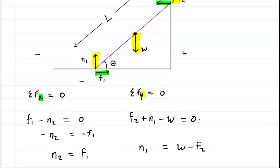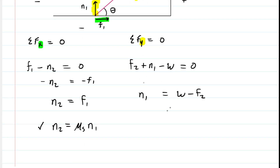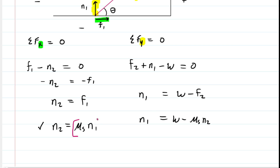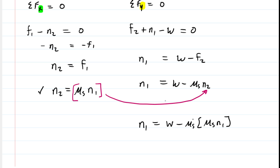F2 is also a static frictional force — F2 equals the coefficient of static friction multiplied by the normal force N2. We substitute that expression for F2 into our equation for N1. We also have an expression for N2 developed a moment ago, so we plug that in as well for the N2 in our current equation.